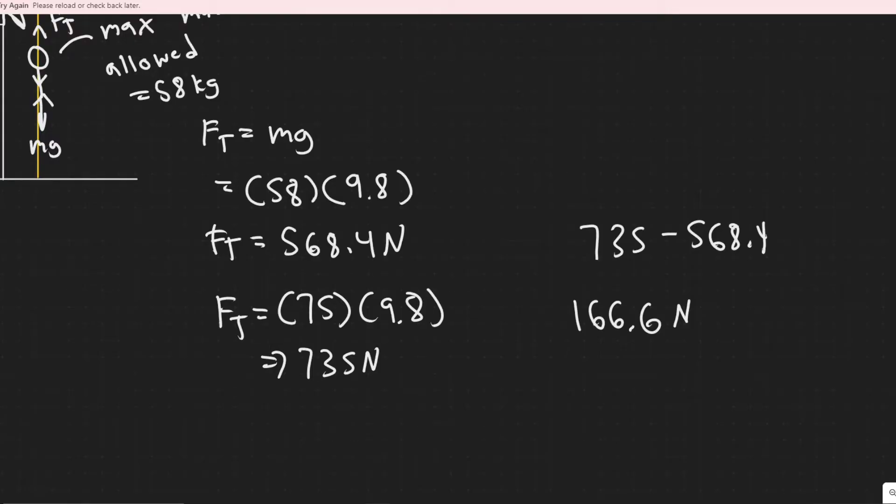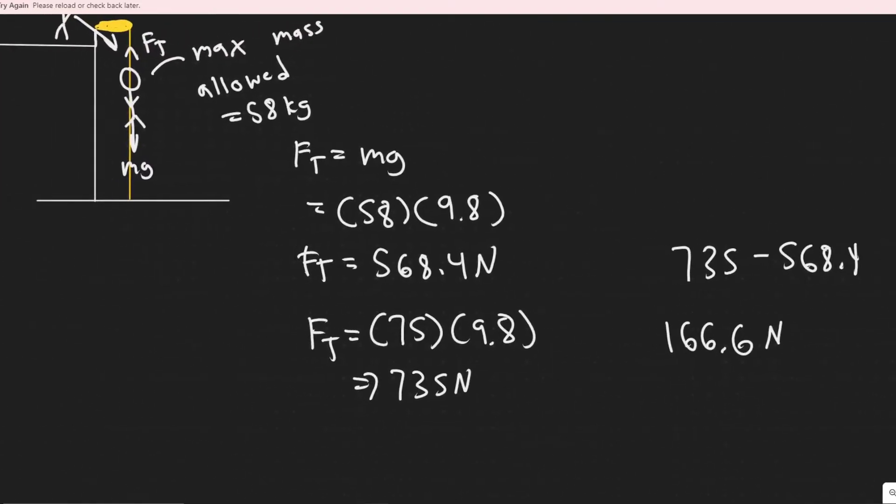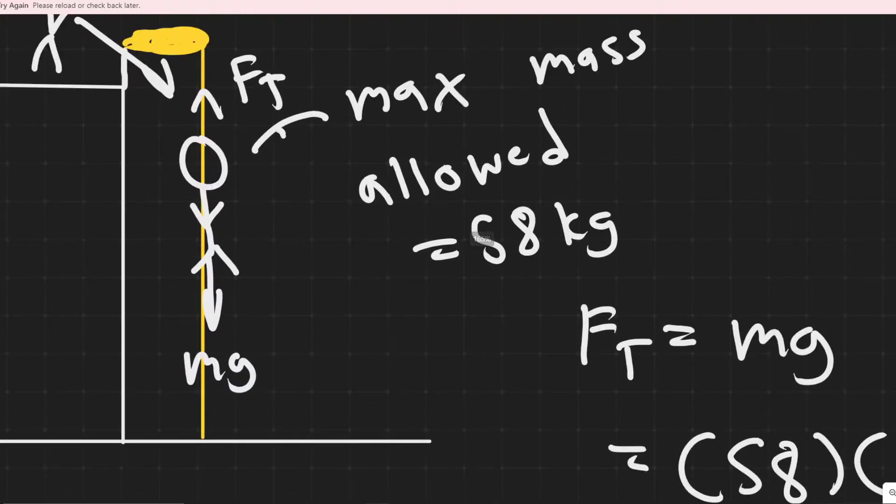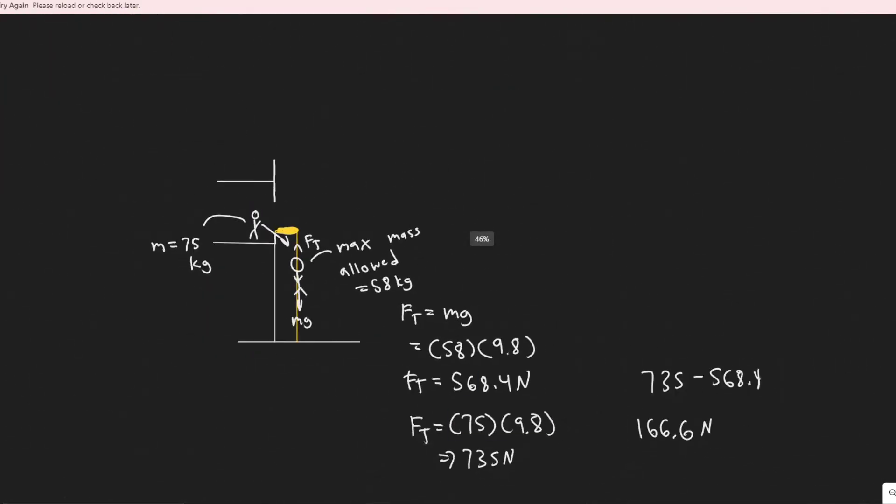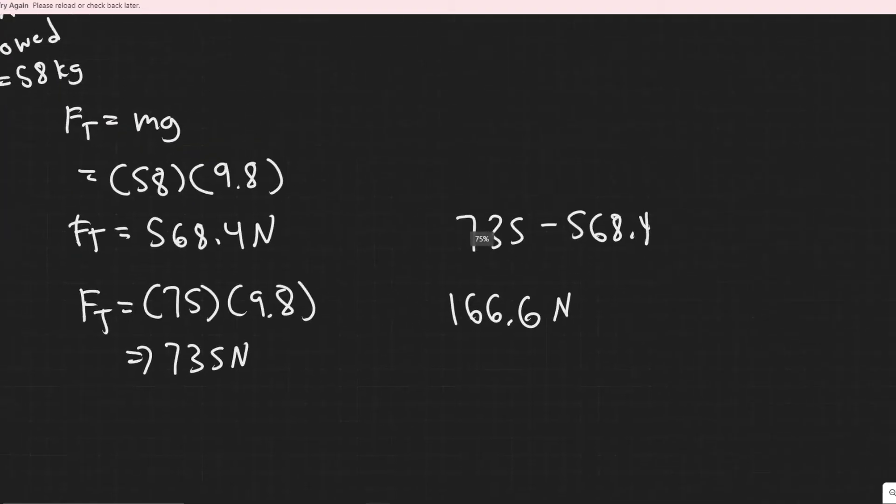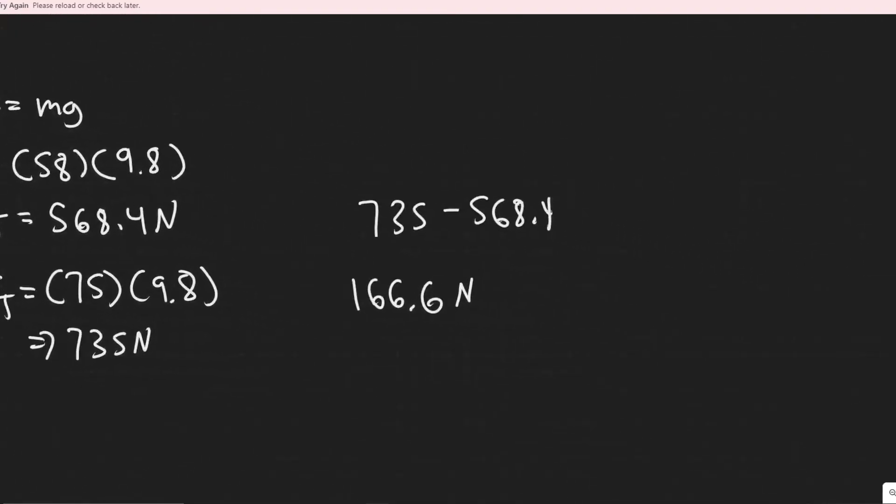So the trick to this problem, or what they're basically asking us for is, what is the acceleration required of our person when on this rope so it doesn't actually break? So they need to have some acceleration that counteracts it. And so the acceleration is going to have to make up for 166.6 newtons of force.